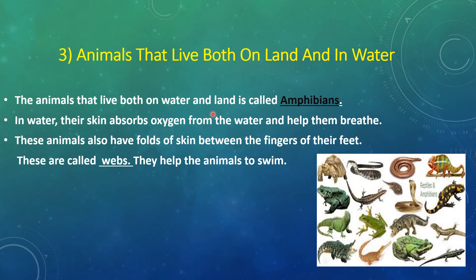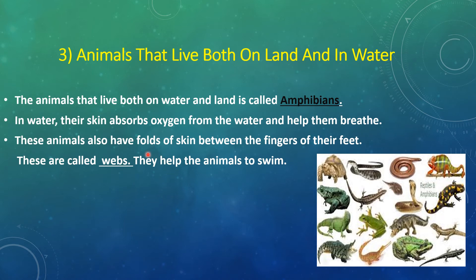The third category is animals that live both on land and water, called amphibians. Examples include snake, tortoise, frog, and crocodile. These animals live on land as well as in water. They have folds of skin between the fingers of their feet called webs, which help them to swim. When on land, amphibians breathe with their lungs. In water, their skin absorbs oxygen from the water to help them breathe.